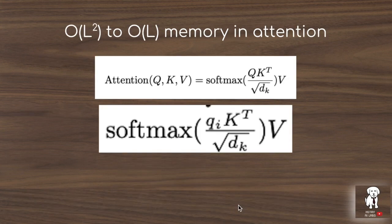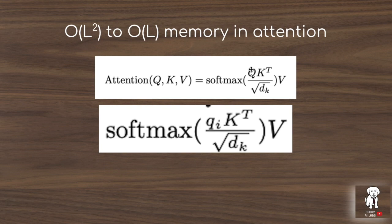Now we'll look at how you go from the order L² memory bottleneck to order L in the Reformer. The L² bottleneck comes from the query times key transpose operation in the attention layer. The query matrix has dimension length by d_k, and the key matrix has dimension d_k by length, so this matrix multiplication produces a length-by-length matrix — order L² in memory.